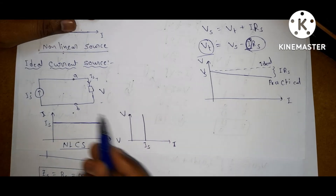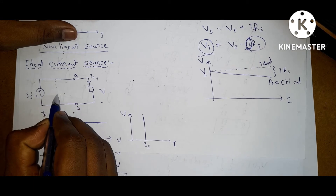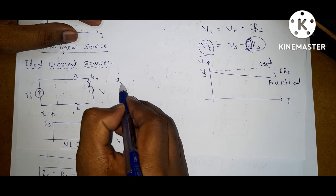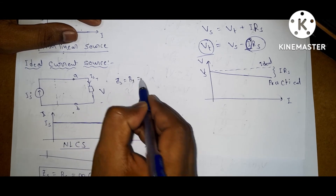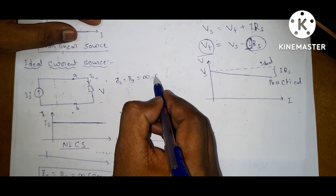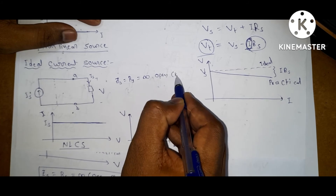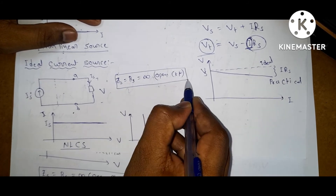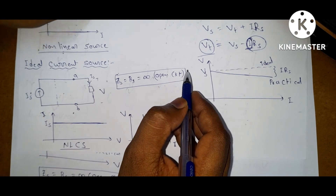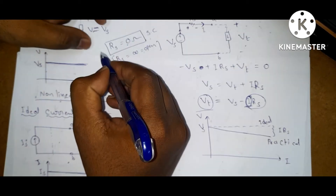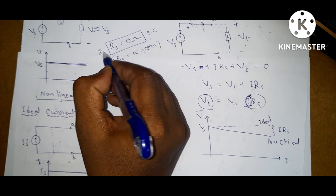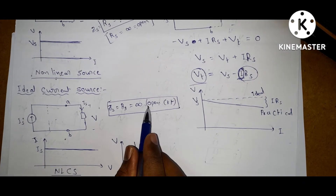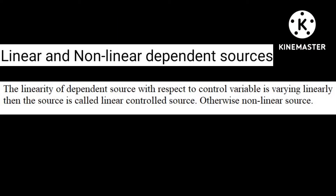For an ideal current source, the internal impedance or internal resistance is equal to infinity — that is, an open circuit. Remember: for an ideal voltage source, internal resistance is zero (short circuit); for an ideal current source, internal impedance is infinity (open circuit).